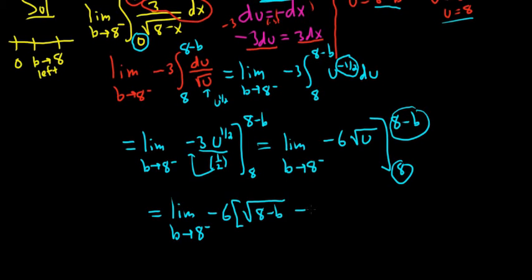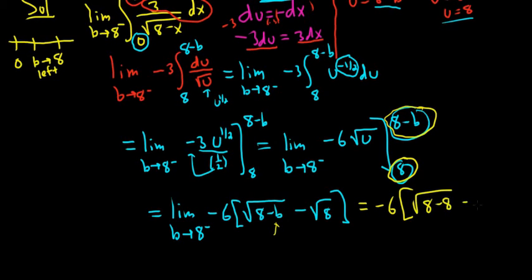Okay, then minus square root 8. Okay, so what we did there was we plugged in this one first. Subtracted and plugged in this one. All right, now we take the limit as B approaches 8 from the left. Well, in this case, you can just plug in 8. No problems. So you're going to get negative 6. You drop the limit sign. Square root 8 minus 8 minus the square root of 8.